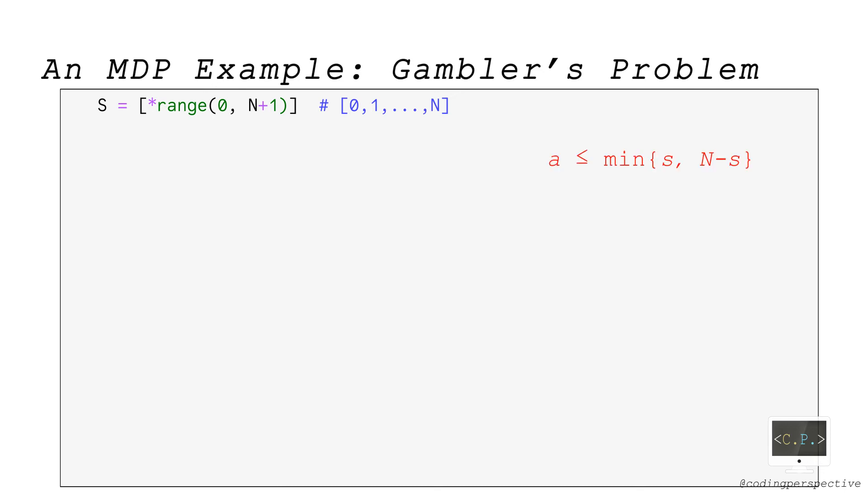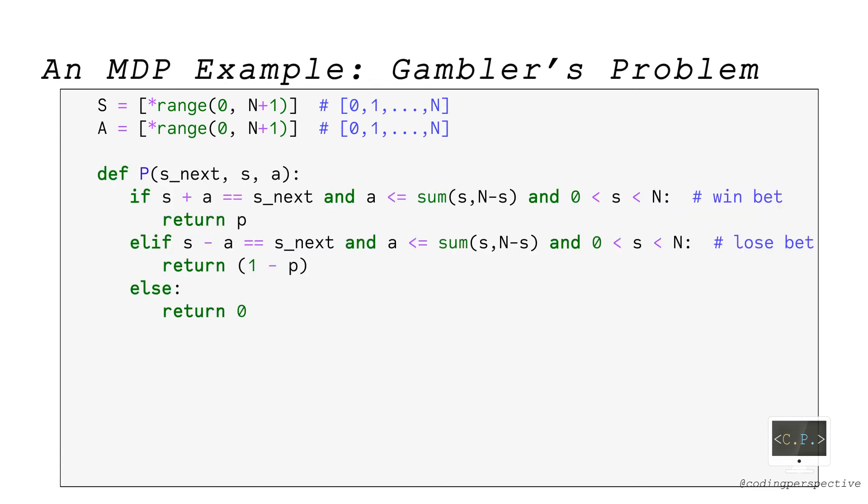The maximum possible amount of bet is the minimum of S and N-S since the fortune cannot be less than 0 or more than N. So, the set A depends on the current state S and it consists of values from 0 to minimum of S and N-S. In this implementation, instead of restricting the set A, I will define the transition function P in a way that any non-feasible transition will not be allowed. So, we define set A from 0 to N and transition function P as you see. It returns P in case of winning, 1-P in case of losing, and 0 otherwise.